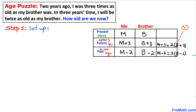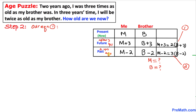Let me call this the first equation as equation number one, and this second equation as equation number two. We are going to solve for m and b by the substitution method. Here is our next step — let's focus on equation number one.